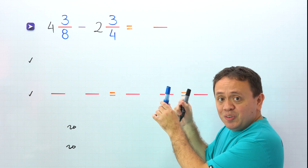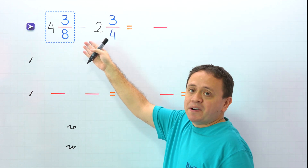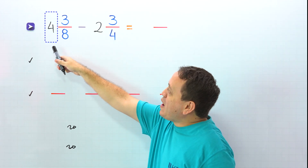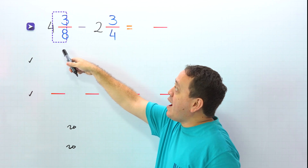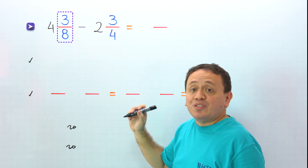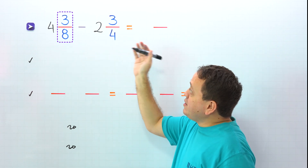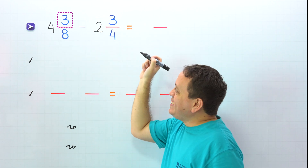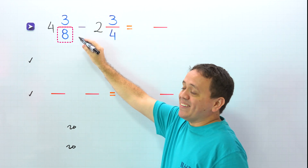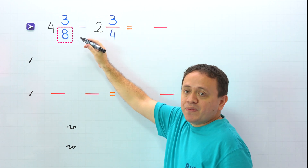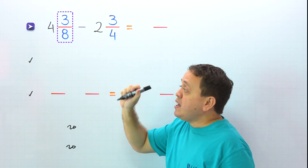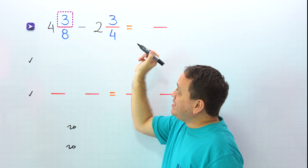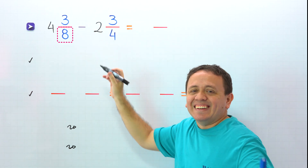Before getting into it, we need to remember that a mixed number is the sum of a whole number and a proper fraction. Also, a proper fraction is a fraction where the numerator, the top number, is less than the denominator, the bottom number. 3 eighths is a proper fraction given that the numerator 3 is less than the denominator 8.